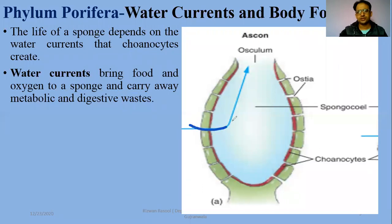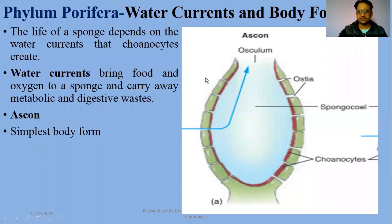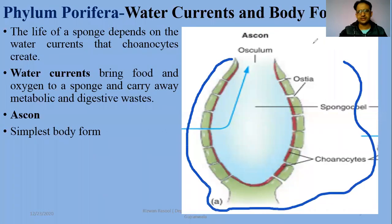Food enters with water currents and waste is removed through the osculum. Ascon is the simplest body form — the simplest sponges exist in this form.